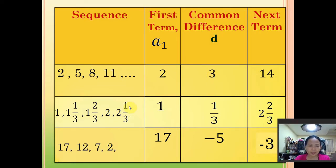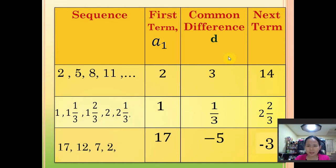For the second sequence, our first term is 1 and our common difference is 1 third. To get 1 third, we subtract 1 and 1 third by 1, so that is 1 third. Also, 1 and 2 thirds minus 1 and 1 third is also 1 third. So to get the next term, we add 1 third to the last term: 2 and 1 third plus 1 third equals 2 and 2 thirds. So this is our next term.